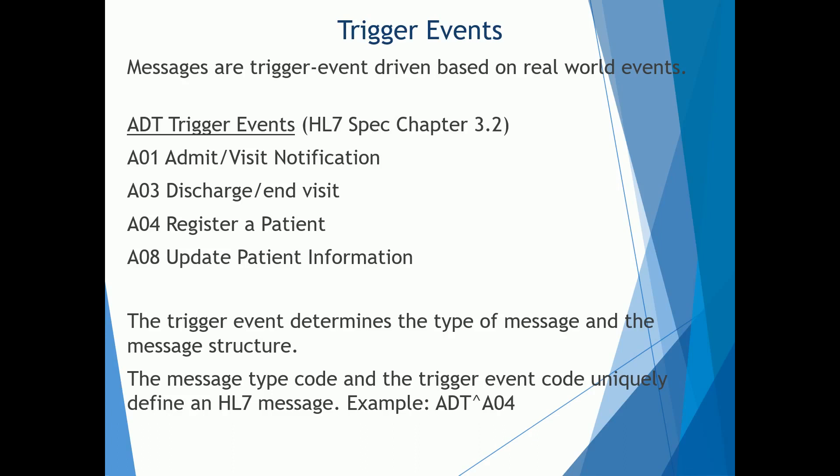A01, A03 — these are also the actual trigger event codes. The message type code and the trigger event code together uniquely define an HL7 message. For example, you have ADT, which is the message type code for patient administration, and then A04 — so ADT^A04 is registering a new patient.